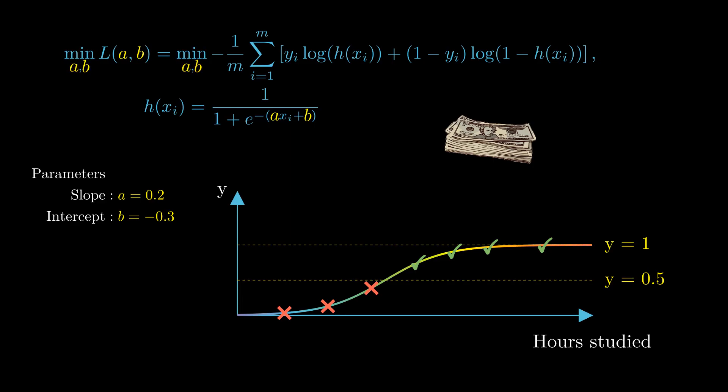But why is the cost function of logistic regression so complicated? Intuitively, it would make sense to simply measure how far our guesses are from each data point. A typical approach would be to then square these distances and calculate their average.